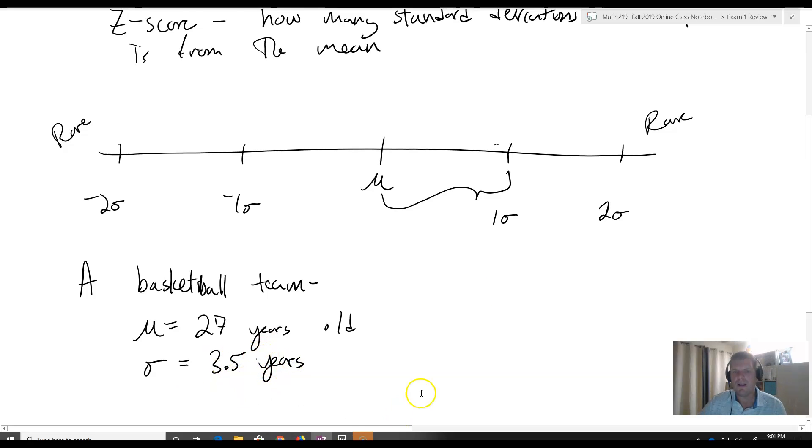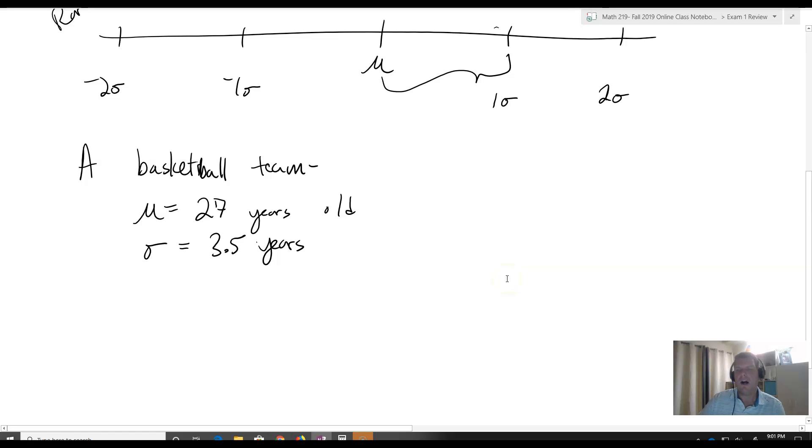What we want to know is what would constitute somebody who is unusually young. The first thing to get for something to be unusually young is that it's going to be a number of years less than the average, because it's going to be on the young side. So how many? Two standard deviations.